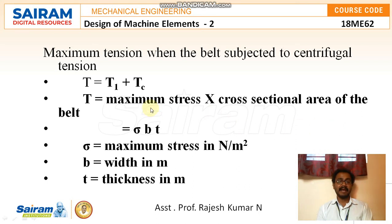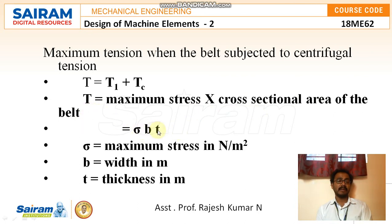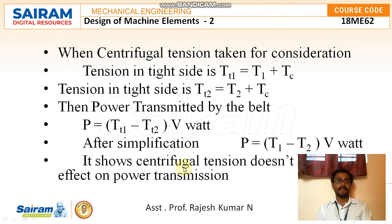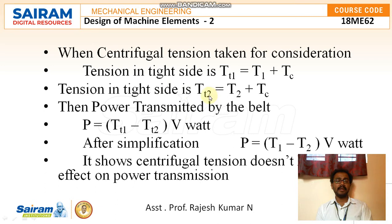Maximum tension T = σBt, where σ is maximum stress in N/m², B is the width, and t is the thickness. When centrifugal tension is considered, the tension on the tight side becomes T1 + Tc and on the slack side T2 + Tc. The power transferred is still P = (T1 − T2) × V after simplification, which shows that centrifugal tension does not have any effect on power transmission.